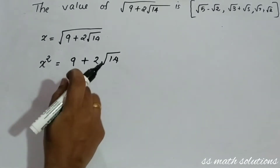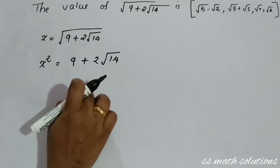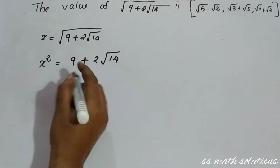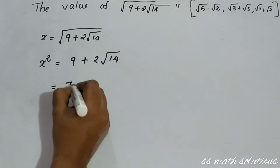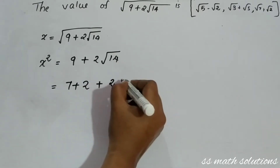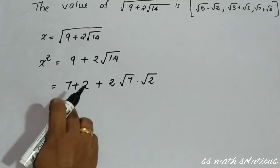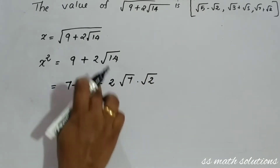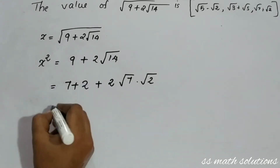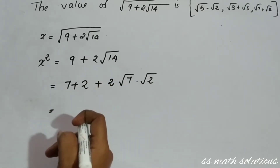Now I am writing 9 as 7 + 2, and 14 as 7 × 2. So we have 7 + 2 + 2√14, and we change √14 to √7 × √2. So x² = 7 + 2 + 2·√7·√2.